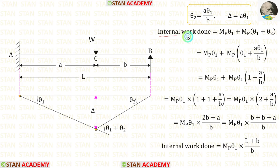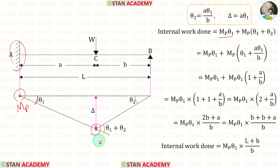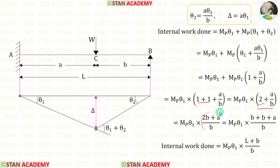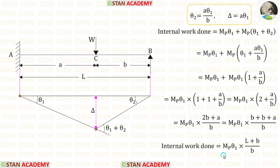Now let us find the internal work done. At the fixed end we have a plastic hinge, so we multiply Mb by this angle: Mb into theta1. Also we have a plastic hinge under the load, so Mb into (theta1 plus theta2). Adding these two, and substituting theta2 as a·theta1 upon b, we can take theta1 outside. Taking Mb·theta1 as common, using LCM we get 2b as b plus b, and b plus a equals l. This is the internal work done.